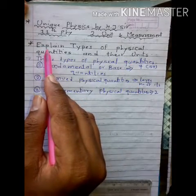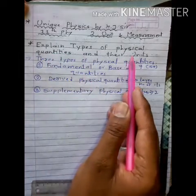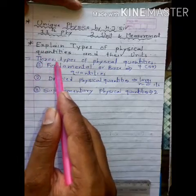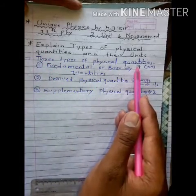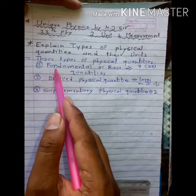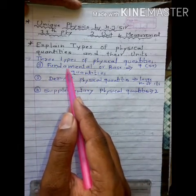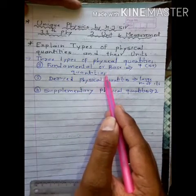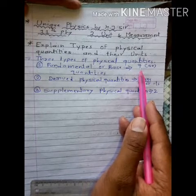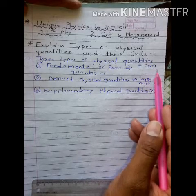Our question is: explain types of physical quantities and their units. There are three main types of physical quantity. Number one: fundamental or base quantities. The first type is fundamental or base quantity. In this quantity, we consider seven quantities, and this system is called the SI system — the international system of units.